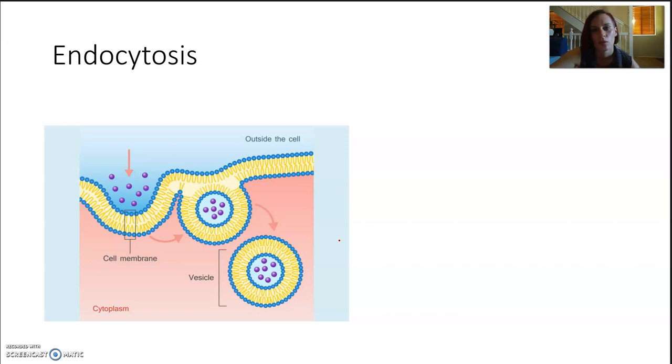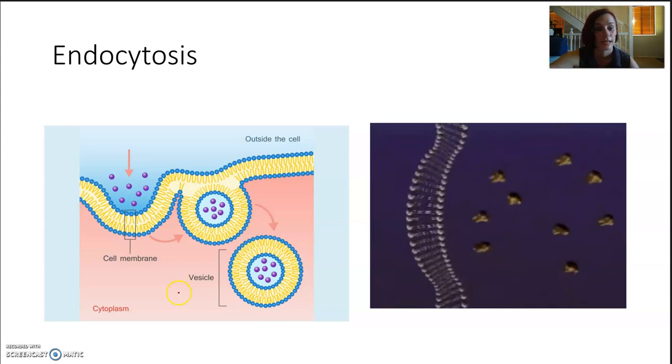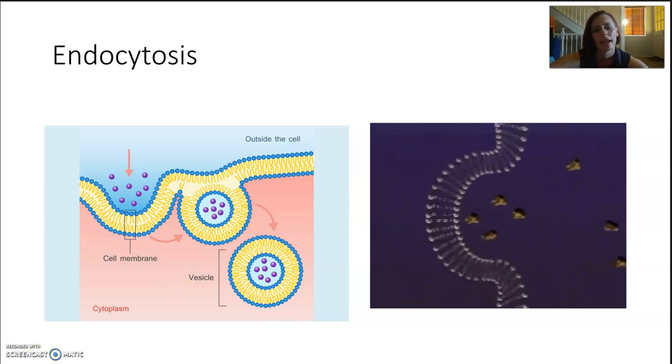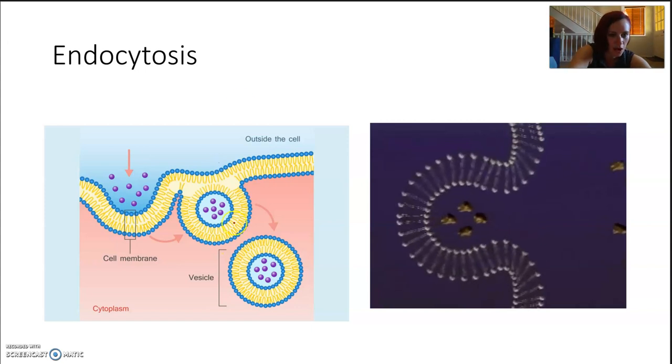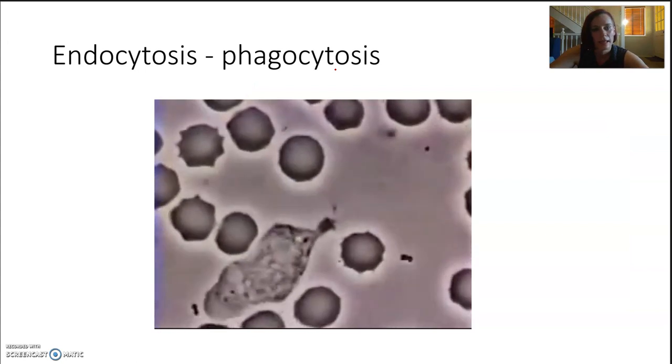Endocytosis is helpful when we want to transport large things that may not fit through some of those protein channels. So a cell might like to push out some antibodies to fight infections. It might need to take in some food for digestion or bacteria to destroy. Now, this can occur due to that fluidity of the membrane. It means the membrane can wrap around other things and pull them in and then rearrange itself. The phospholipids can rearrange themselves, as you can see on this side over here.